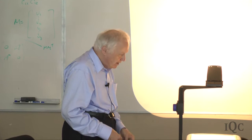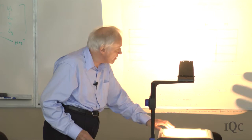Let's turn to some of the alleged solutions to the realization problem in the literature. It is helpful to ask a couple of questions. First: do we expect the formalism of quantum mechanics, as supplemented by the standard measurement axiom, to correctly predict all experimental data for the indefinite future at all levels up to and including our own direct consciousness? Most practitioners of quantum mechanics today would probably say yes. Let's suppose the answer is yes and go on to the next case later.